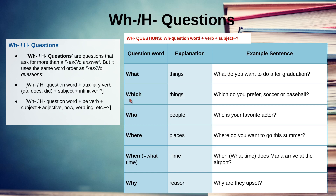We've got which, meaning 어떤. For example: Which do you prefer — soccer or baseball? 어떤 걸 선호하니? We've got who, meaning 누구. For example: Who is your favorite actor? Who can be the subject of the sentence. We've got where, meaning 어디. For example: Where do you want to go this summer? 이번 여름에 어디로 가고 싶니?